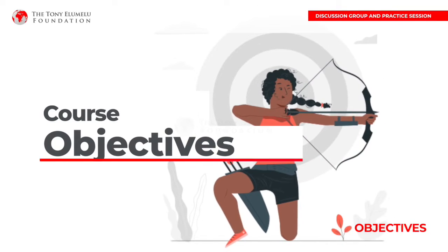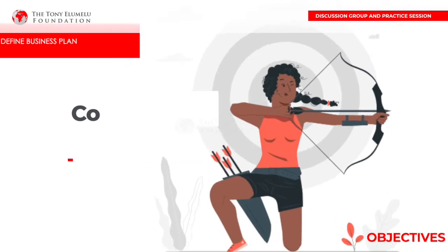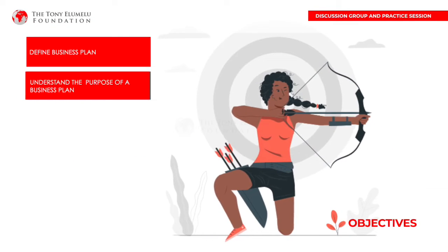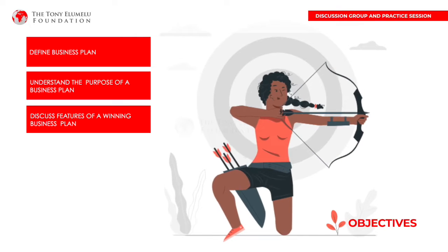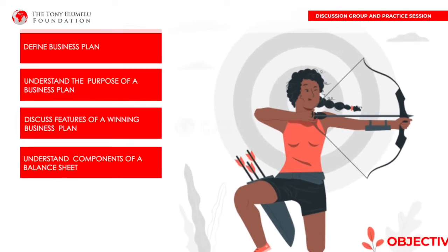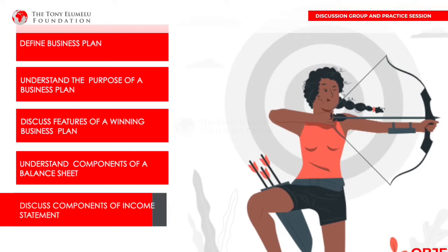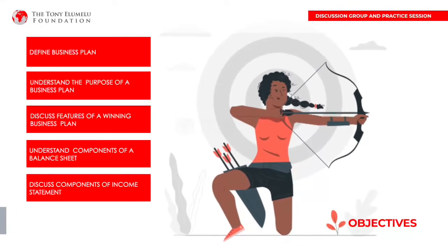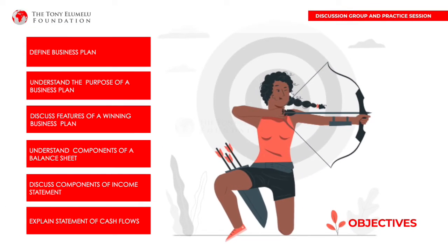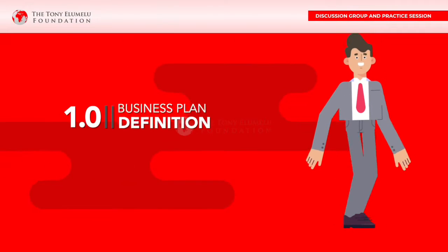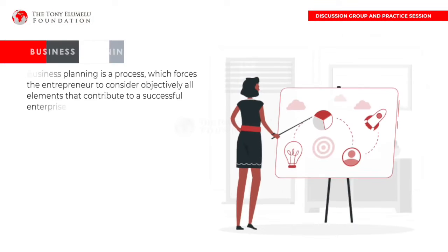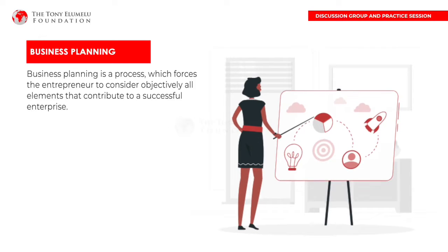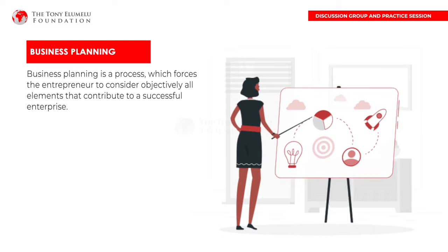Objectives: At the end of the training, participants will be able to define a business plan, understand the purpose of a business plan, discuss features of a winning business plan, understand components of a balance sheet, discuss components of income statements, and explain statements of cash flows. Business plan definition: Business planning is a process which forces the entrepreneur to consider objectively all elements that contribute to a successful enterprise.